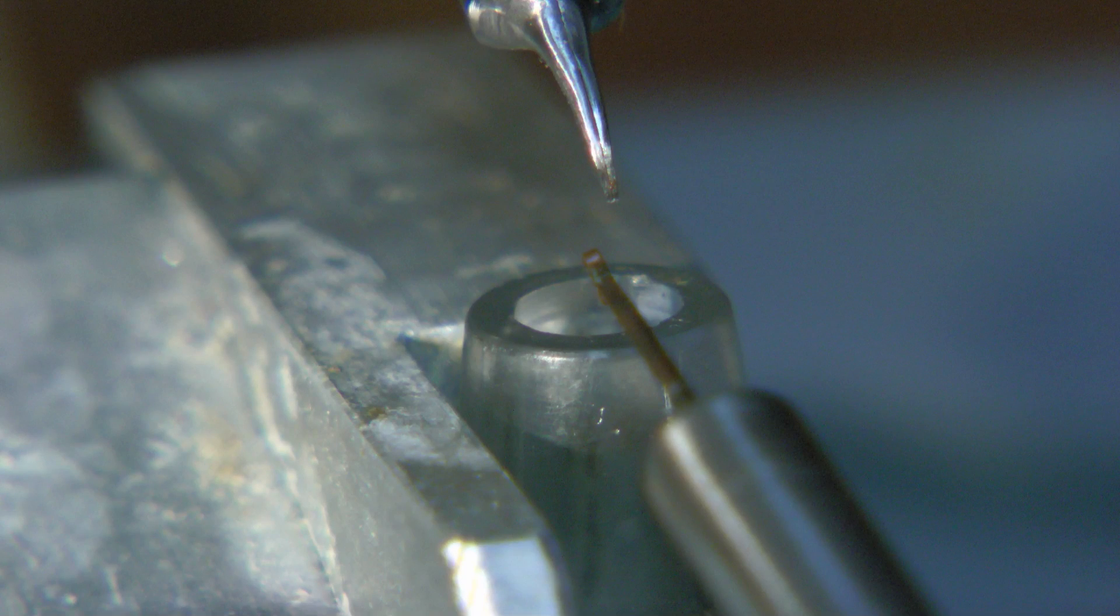Bill will place the virgin queen in the tube so her abdomen sticks out. He will flow carbon dioxide up the tube to put her out.